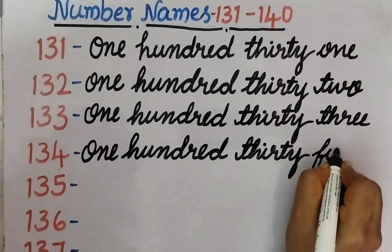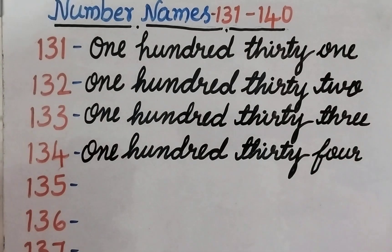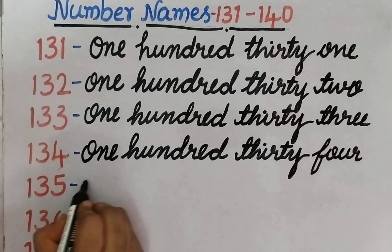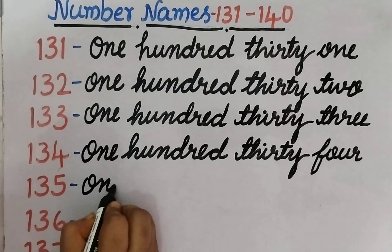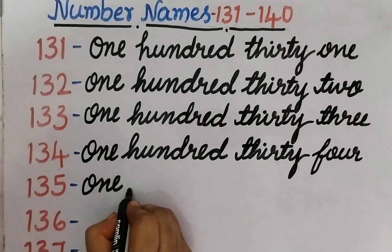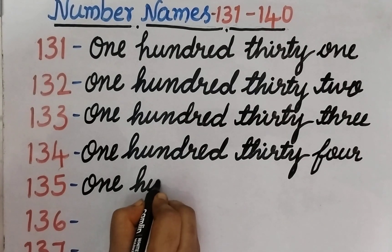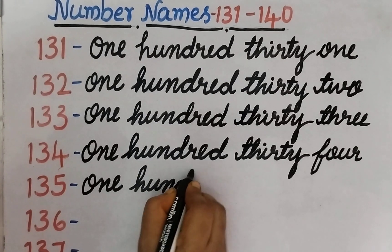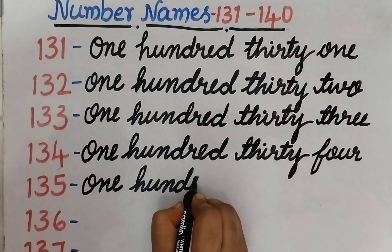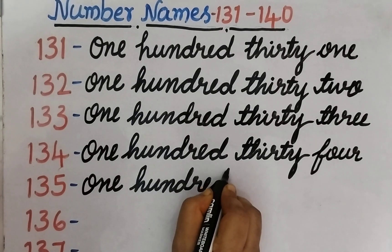O, N, E — F, O, U, N — E — 1. H, U, N, D, R, E, D — 100.